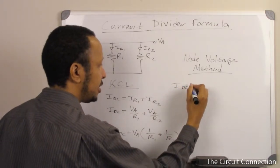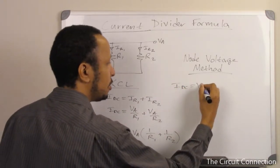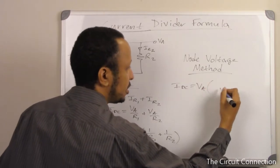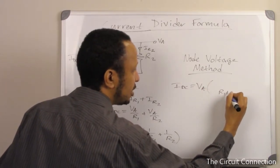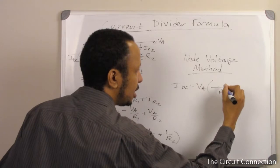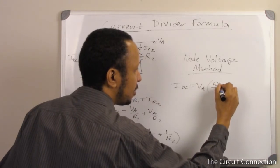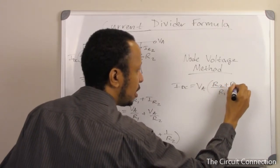Now we have IDC equals VA times R2 plus R1, our common denominator, over R1 times R2.